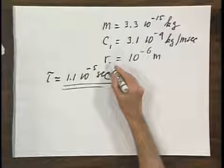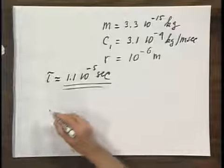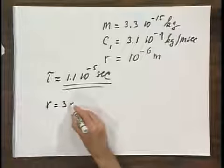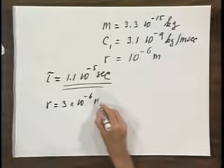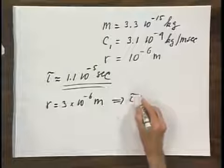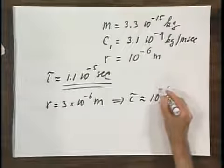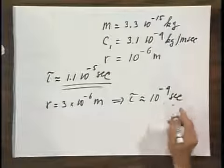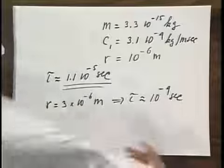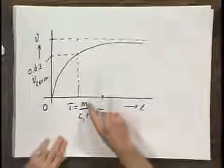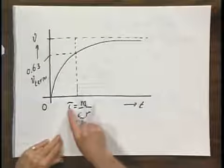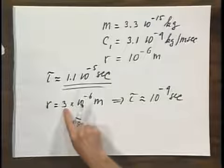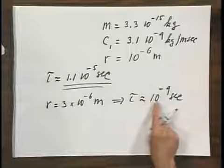If I had chosen a larger oil drop — for instance, a radius of 3 microns — then tau would be roughly 10 to the minus 4 seconds, about a tenth of a millisecond. Notice that mass goes with R cubed and there is one R in the denominator, so tau scales with R squared. If I make R three times larger, tau becomes nine times larger.